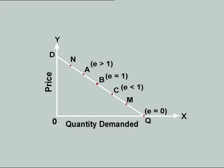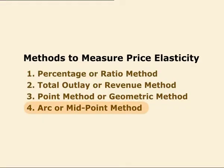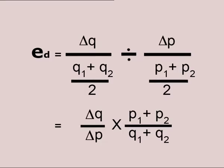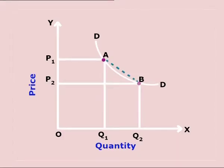ARC Method or Midpoint Method: in the case of large changes in price and quantity demanded, the arc method is used to calculate price elasticity of demand. In this method, price elasticity of demand is obtained by taking the average of the original price and subsequent price, as well as the average of the original quantity and subsequent quantity, as the basis for measuring percentage change in price and quantity. This is clear from the diagram and formula presented in the visual.